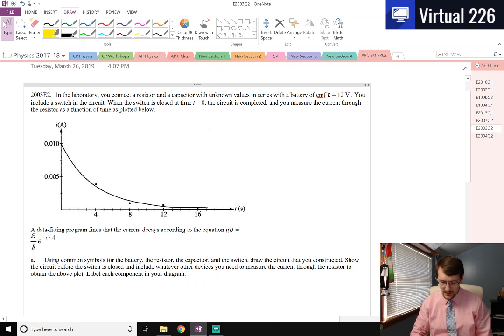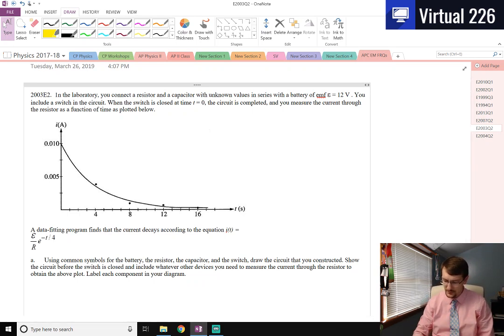In a lab, we connect a resistor and a capacitor with unknown values in series with a battery with an EMF of 12 volts. We include a switch in the circuit so we can turn it on and off. When the switch is closed at time equals zero, the circuit's now completed, and you measure the current through the resistor as a function of time as plotted below. We see this wonderful graph here, a nice decay.